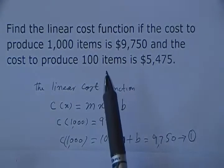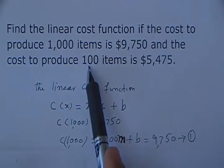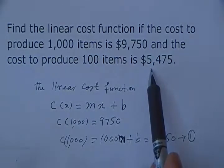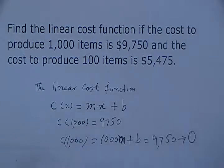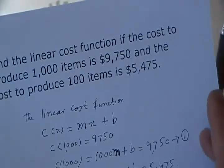Then, adding the other values. When x is 100, the cost is $5,475. So in this equation, we're plugging this with 100.